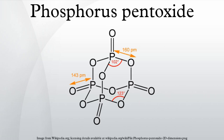The most important application is the conversion of primary amides into nitriles: P4O10 + RC(O)NH2 → P4O9(OH)2 + RCN. The indicated co-product P4O9(OH)2 is an idealized formula for undefined products resulting from the hydration of P4O10.